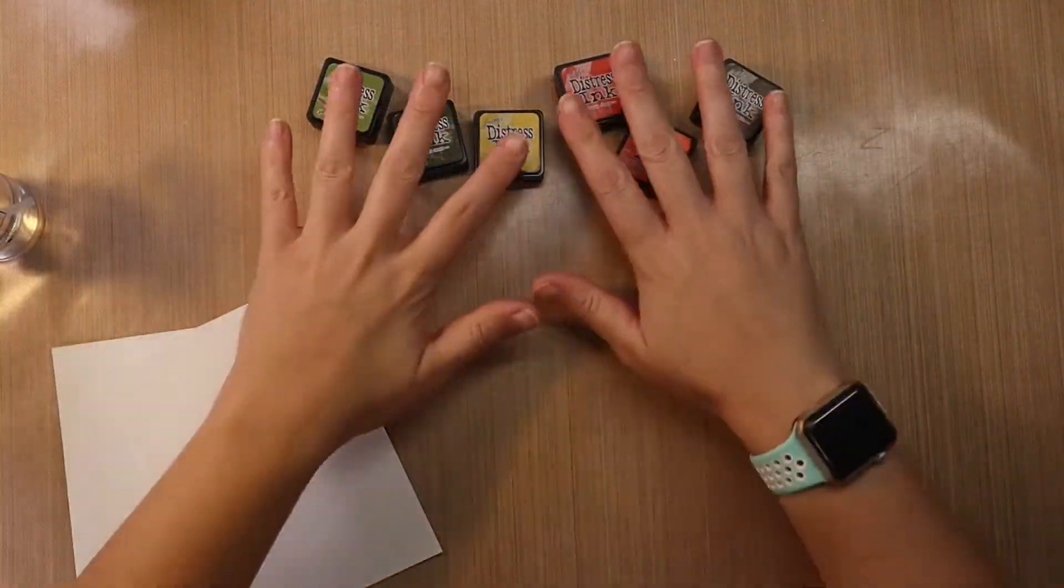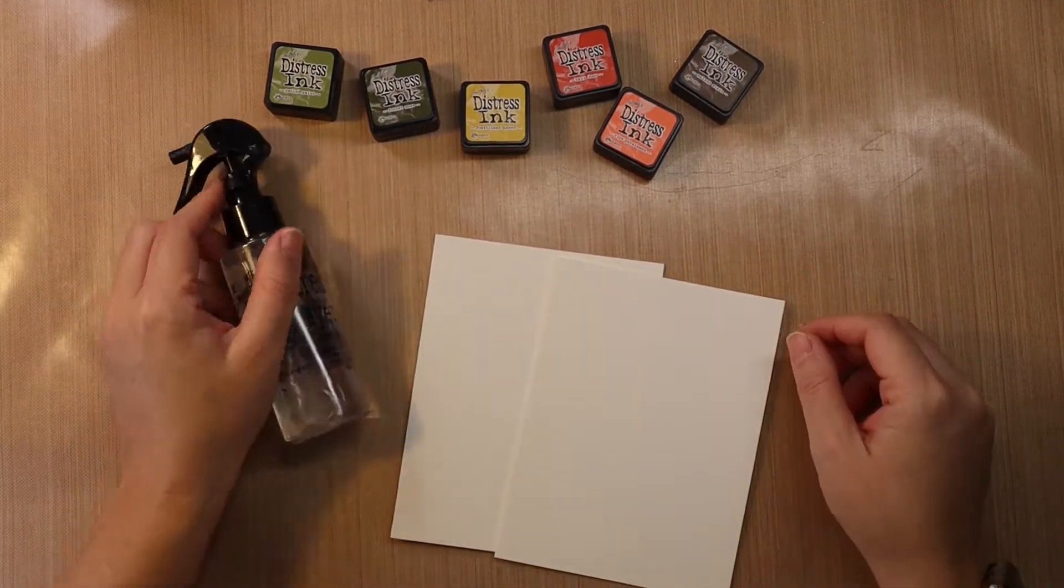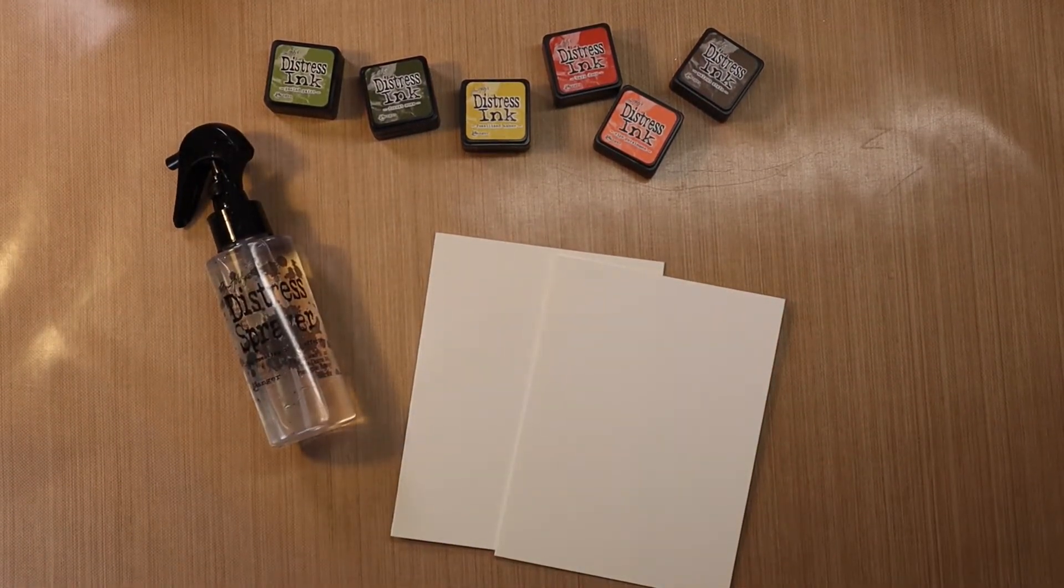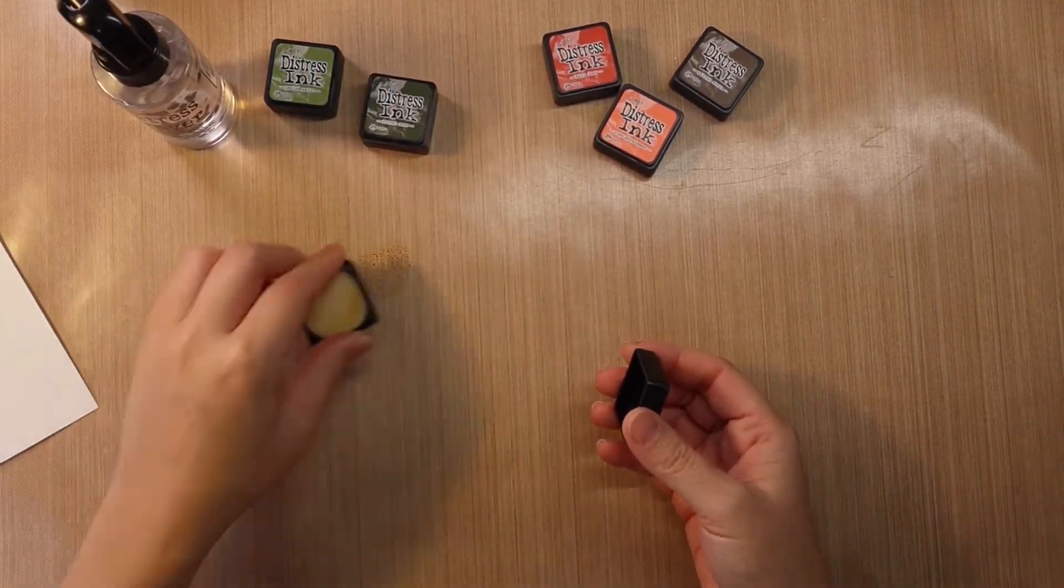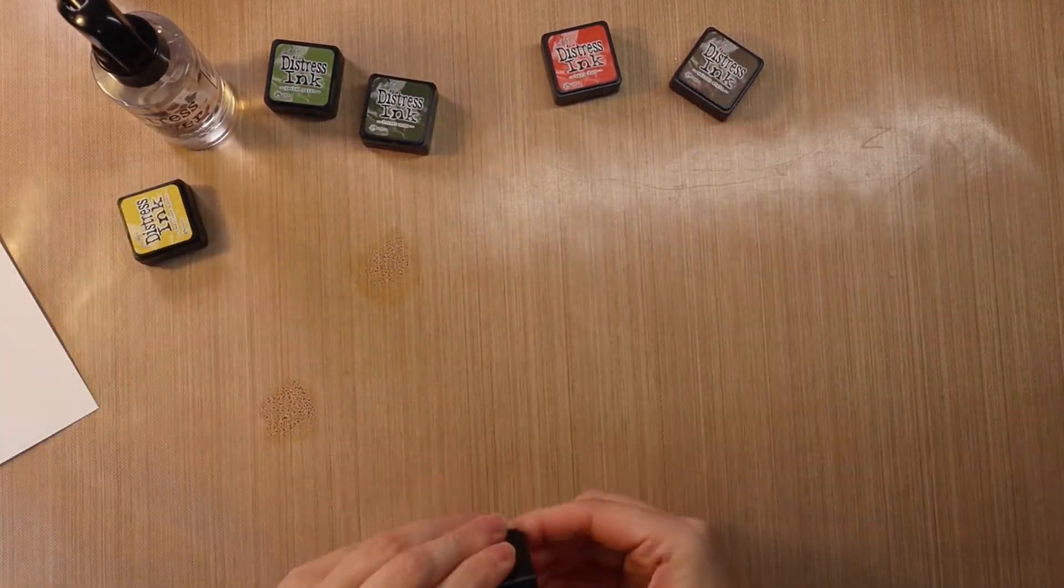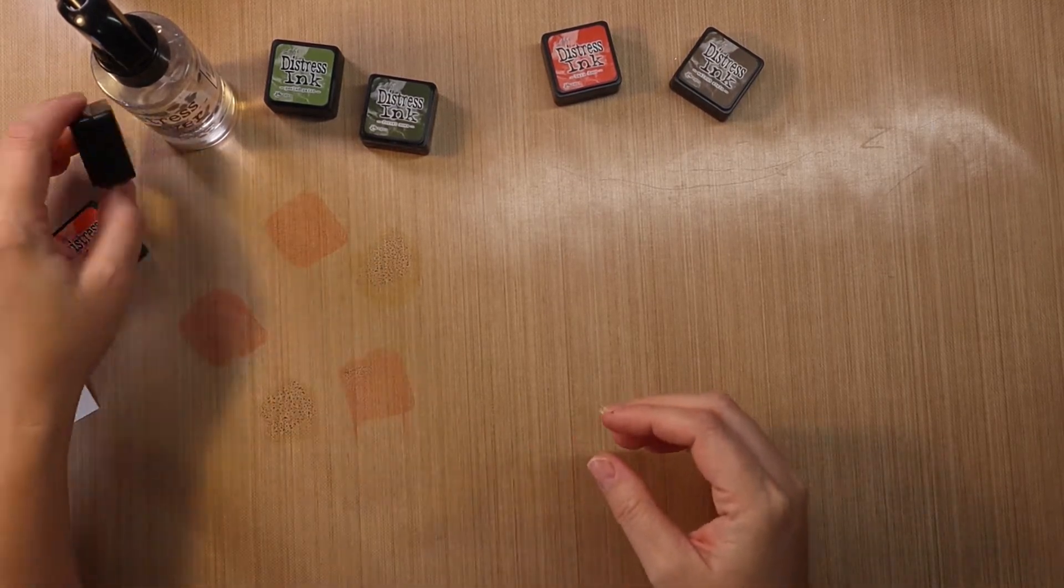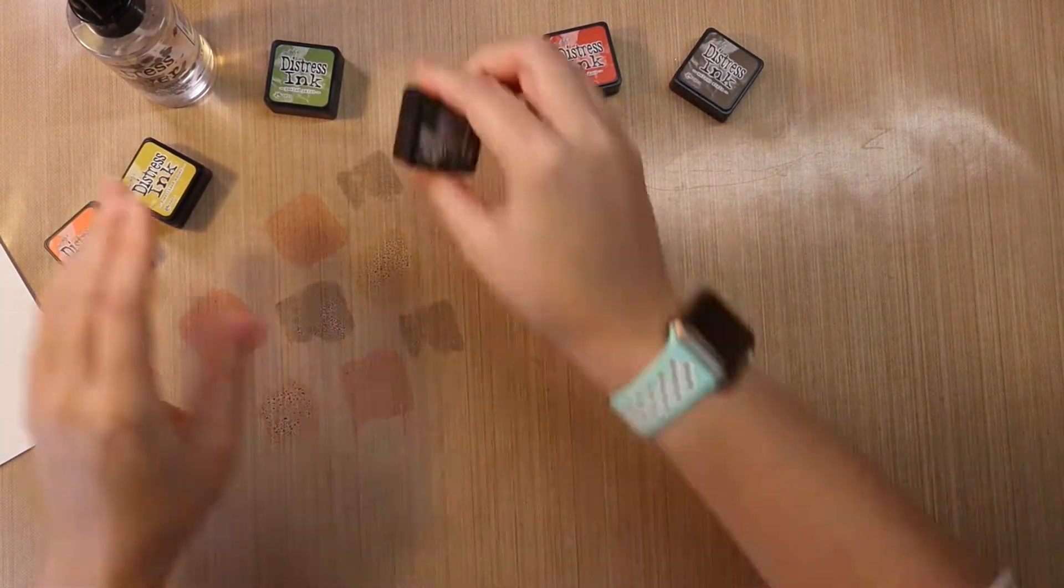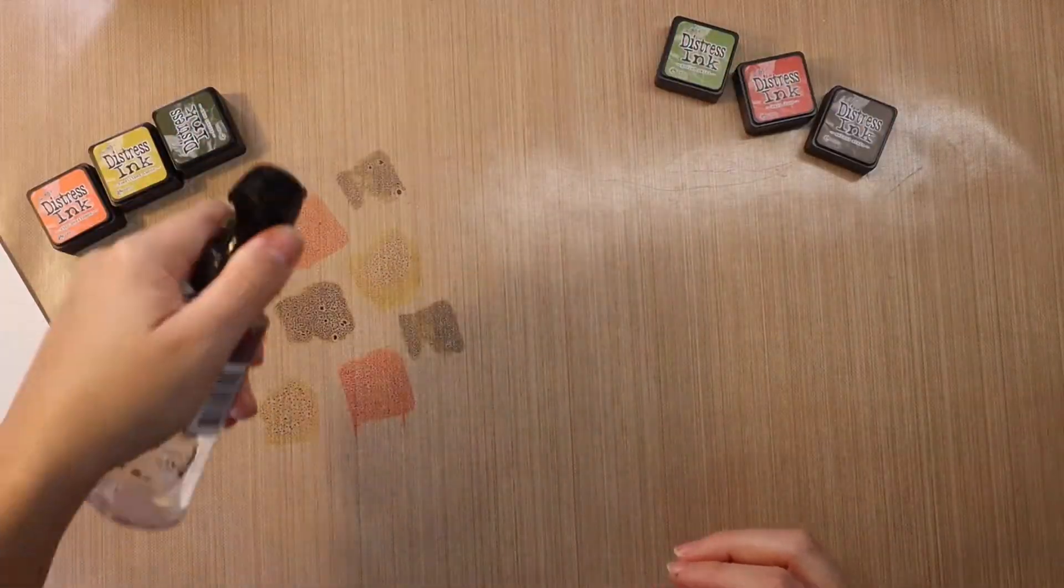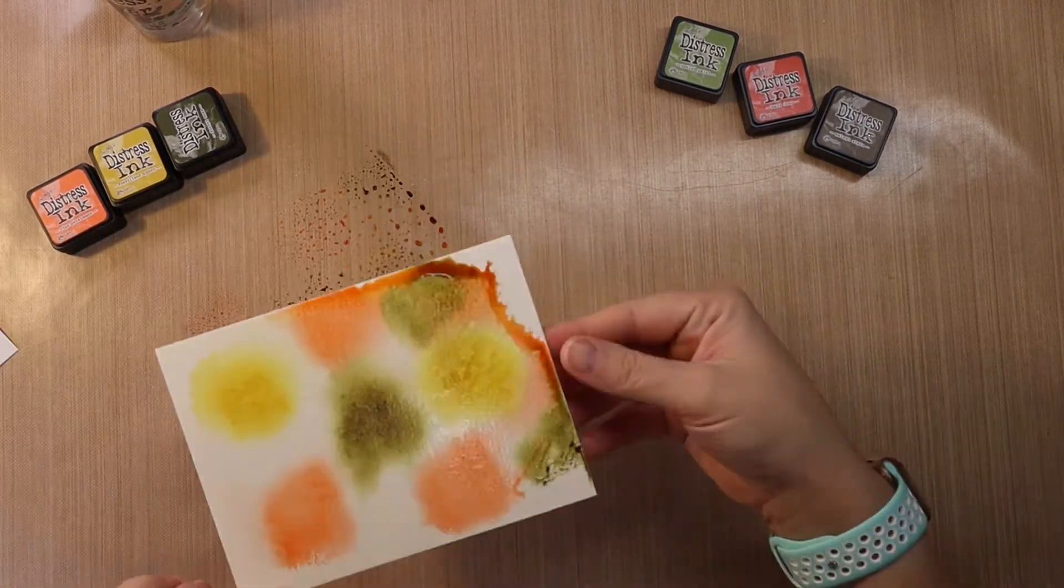This card is starting with some ink smooshing. I'm going to put three colors down. The first three colors I'm starting with are Forest Moss, Fossilized Amber, and Ripe Persimmon. I get those down on my craft mat, add a few spritz of water, and then start putting my watercolor paper into that, kind of move around the color a bit.